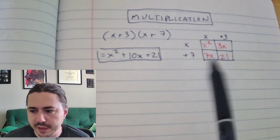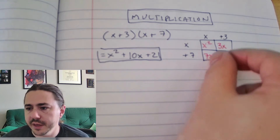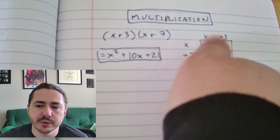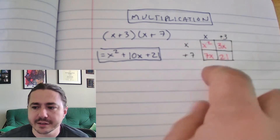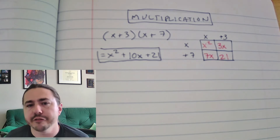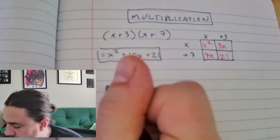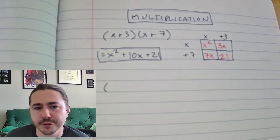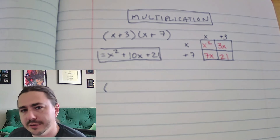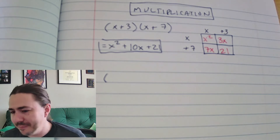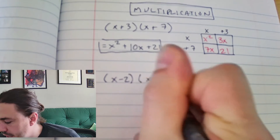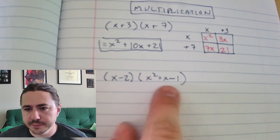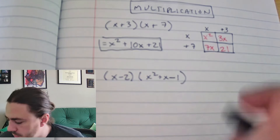That's a 2×2 multiplication. We could multiply polynomials of any size — that just makes the box bigger. Now let's try x minus 2 times x squared plus x minus 1. Notice I've got a binomial times a trinomial — 2 terms times 3 terms — so I'm going to make a 2×3 box. Make sure the trinomial is on the side with 3 blocks, and the binomial on the side with 2 blocks.